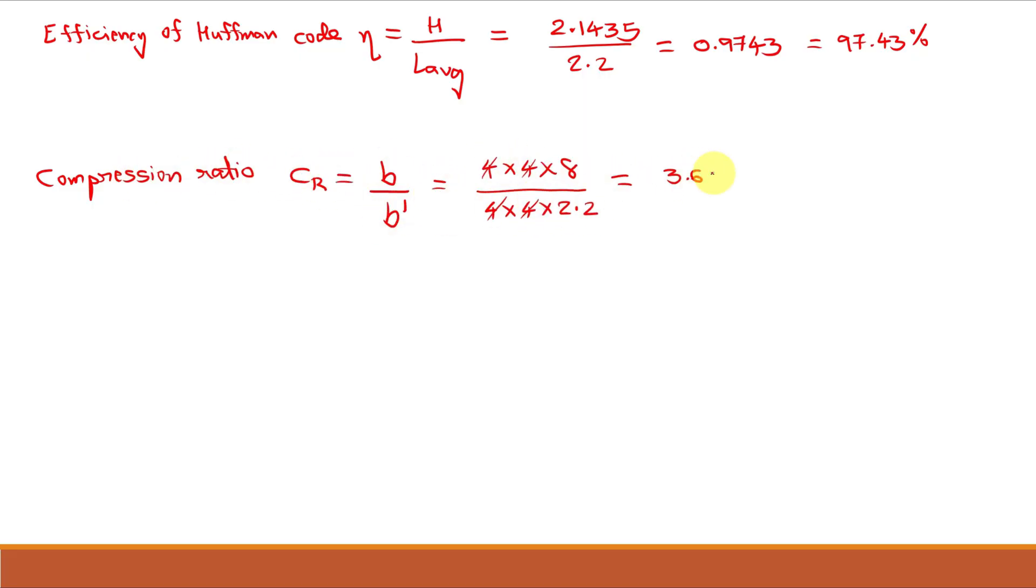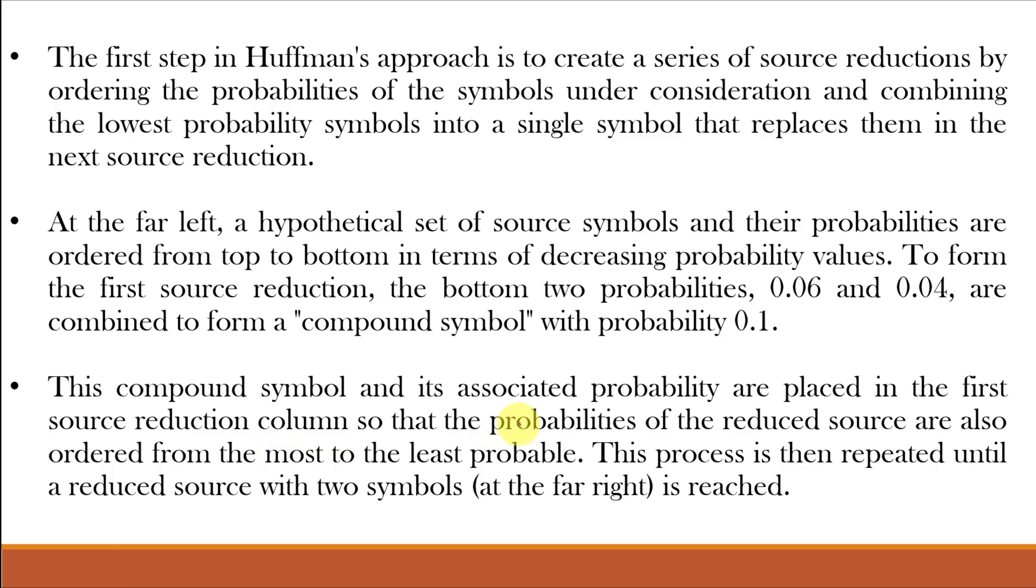Also, we can find the efficiency of Huffman code to analyze how effective our code is. Efficiency is given by entropy divided by L average. Thus, the efficiency is 97.43% which is very good efficiency. Next is compression ratio. Compression ratio is 3.63 and finally redundancy which comes out to be 72.46%. The written explanation is shown in these slides.